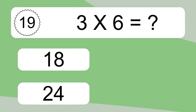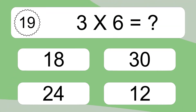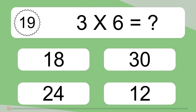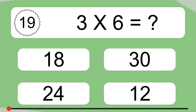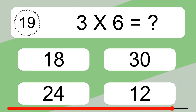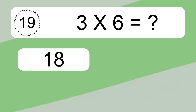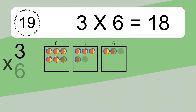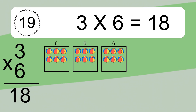3 times 6 equals what? 3 times 6 equals 18.